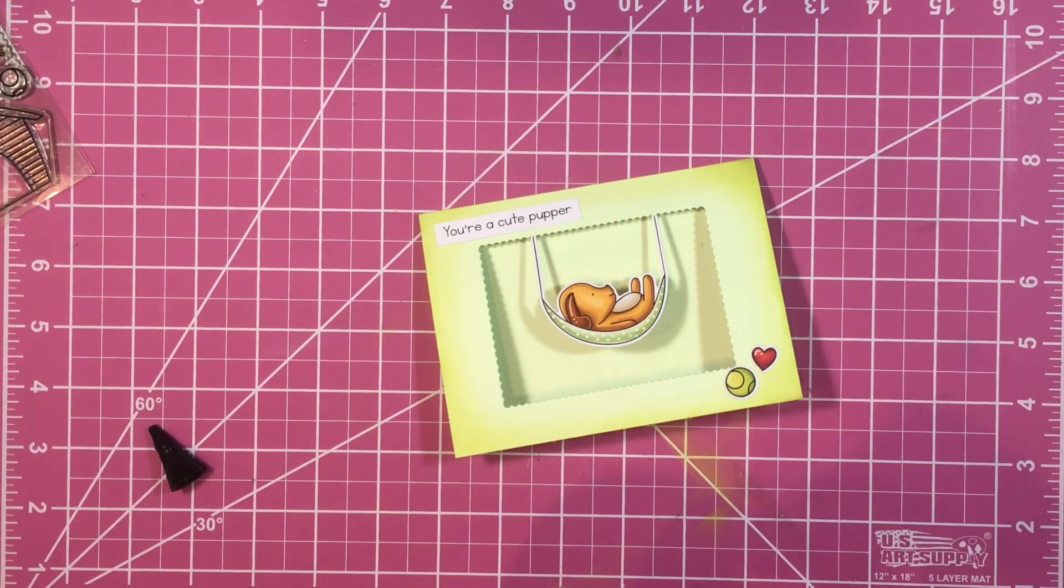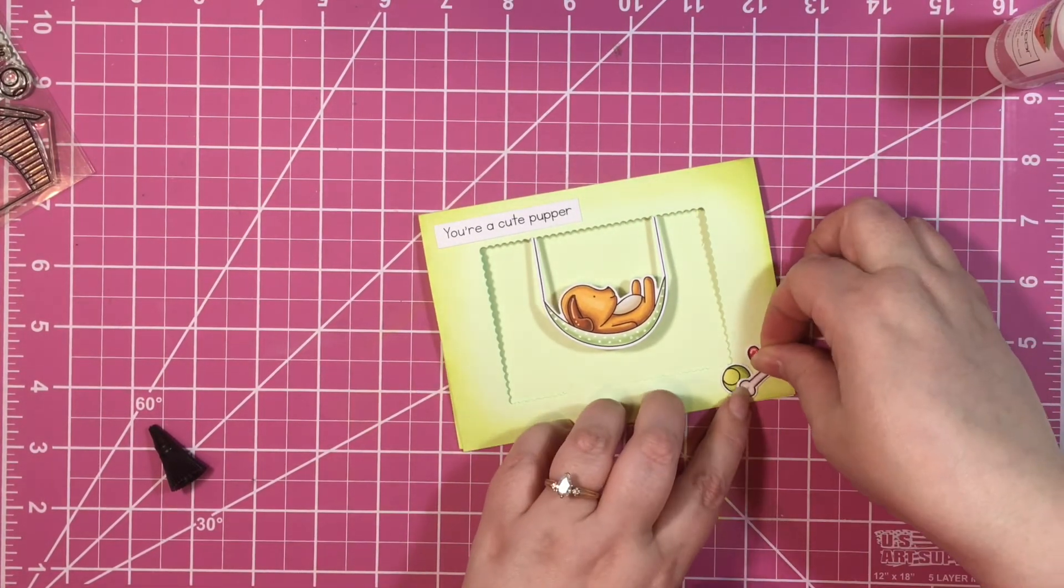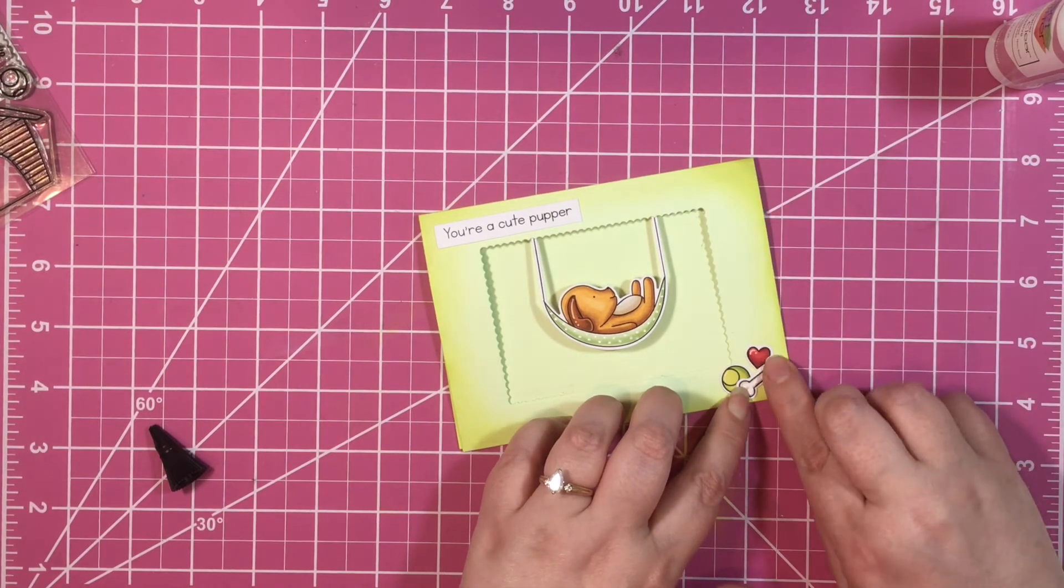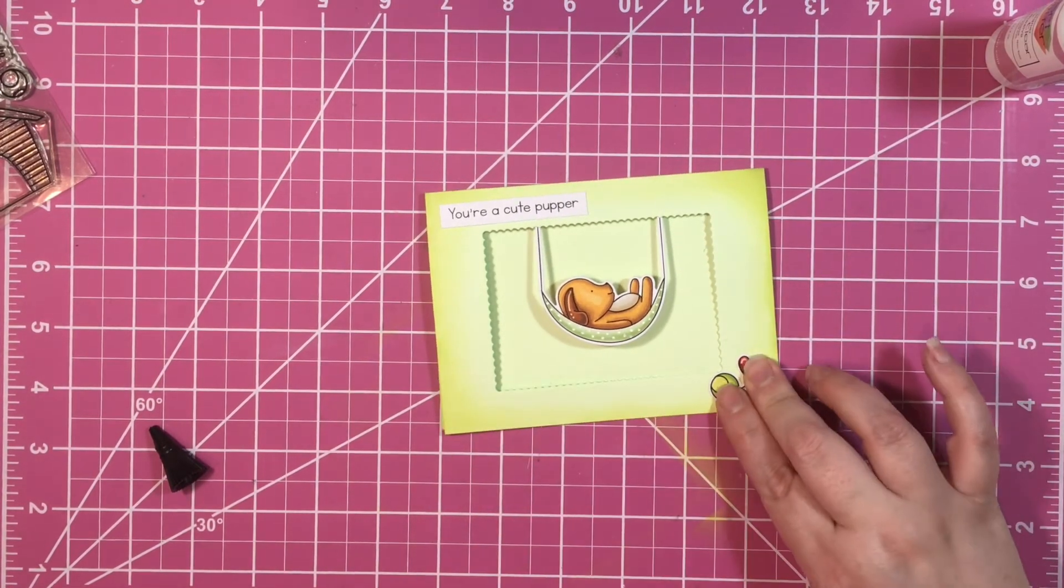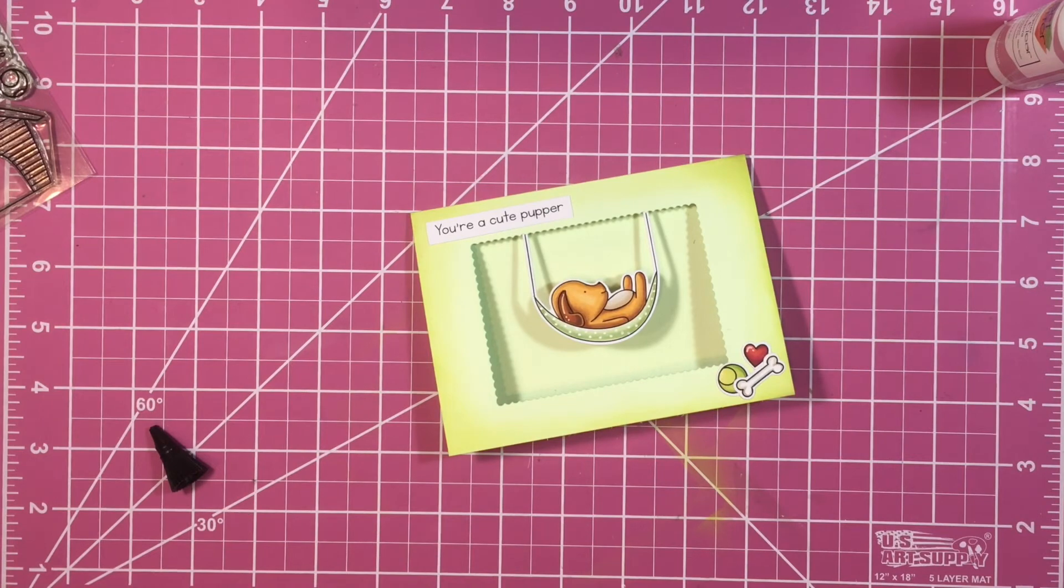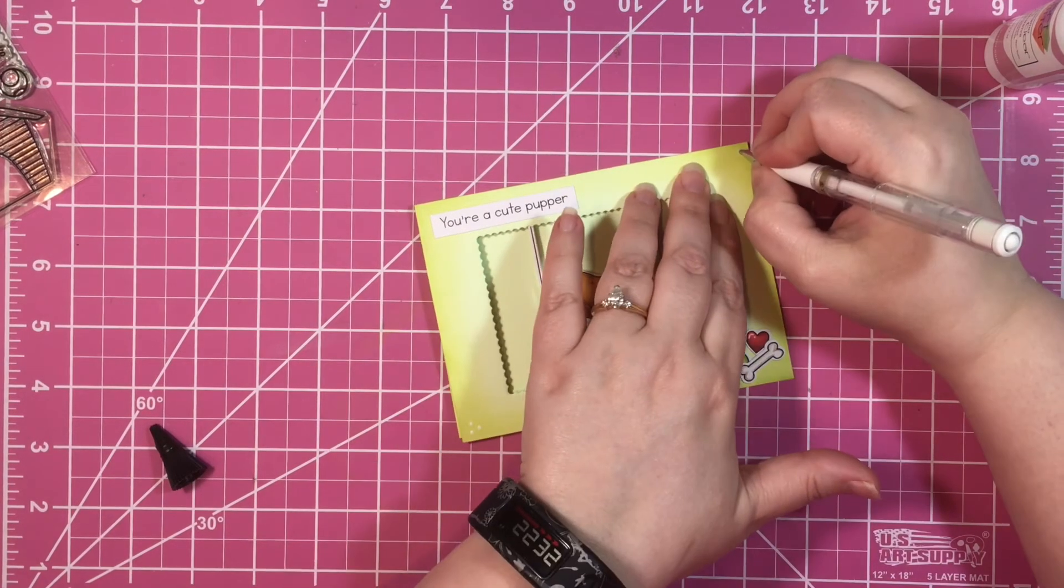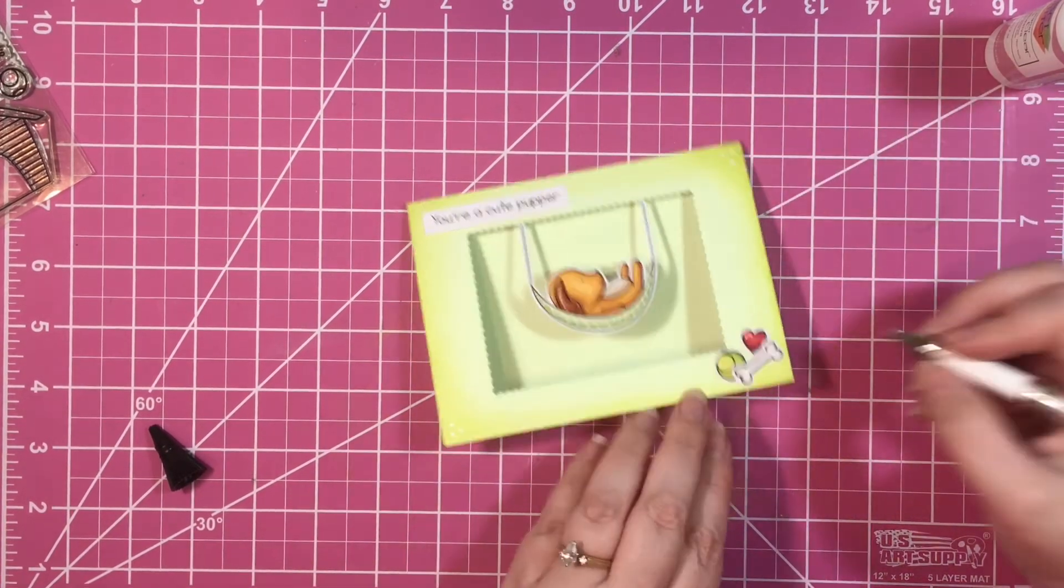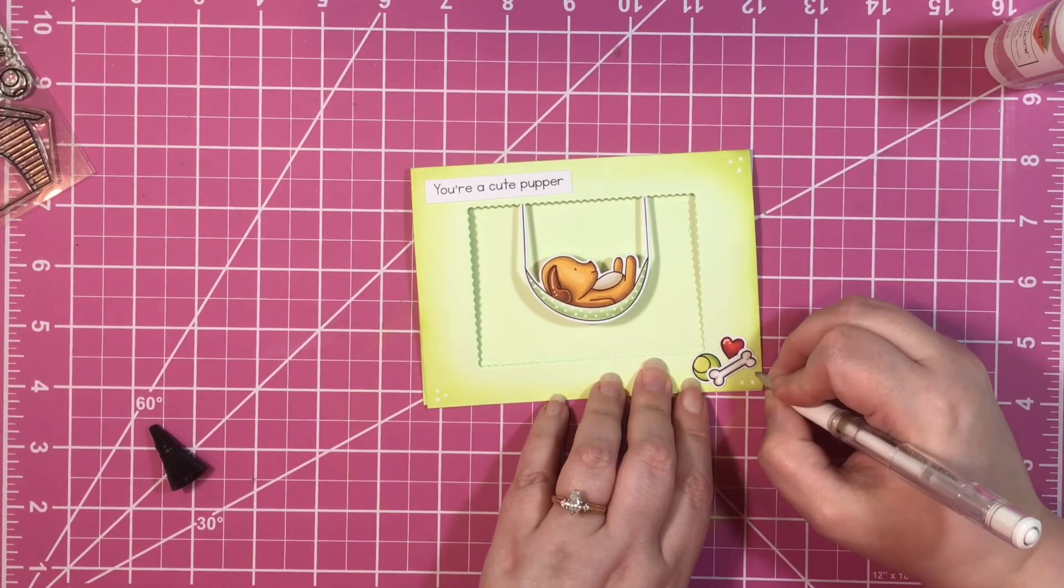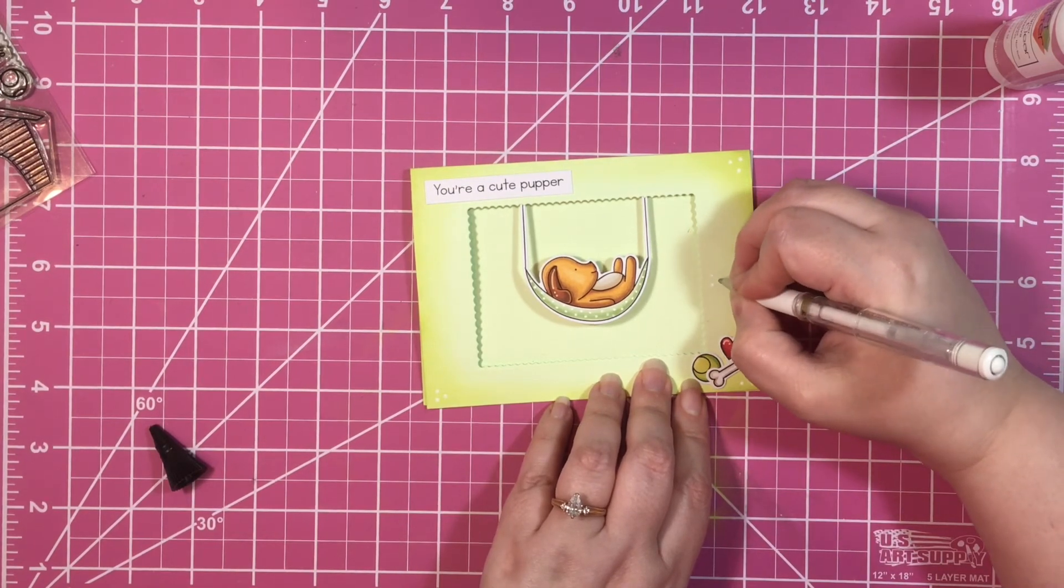To finish off this card, I grabbed my white gel pen and I added three white dots together around the card. In his little hammock there's little white dots, so I wanted to bring that image from the hammock out into the card.